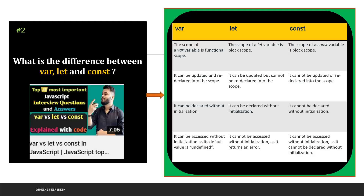The next question says: what is the difference between var, let and const? I have already made a detailed video on this — you can click on the eye button to know the exact details. Let's see the difference in theoretical terms. The scope of var is functional scope, however the scope of let and const are block scope. The second difference is var can be updated and redeclared within the scope. However, let can be updated but cannot be redeclared. And const will not allow you to either update or redeclare it.